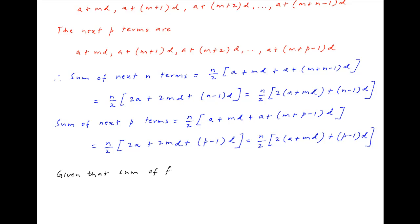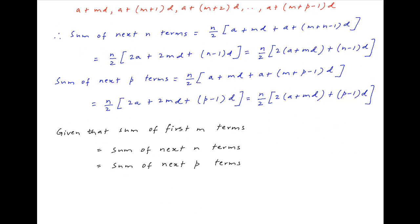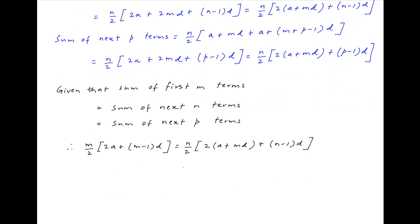Now we are given that the sum of the first m terms equals the sum of the next n terms, which in turn equals the sum of the next p terms. Substituting the values obtained above: m upon 2 times 2a plus m minus 1 times d equals n upon 2 times 2 times a plus md plus n minus 1 times d, equals p upon 2 times 2 times a plus md plus p minus 1 times d.